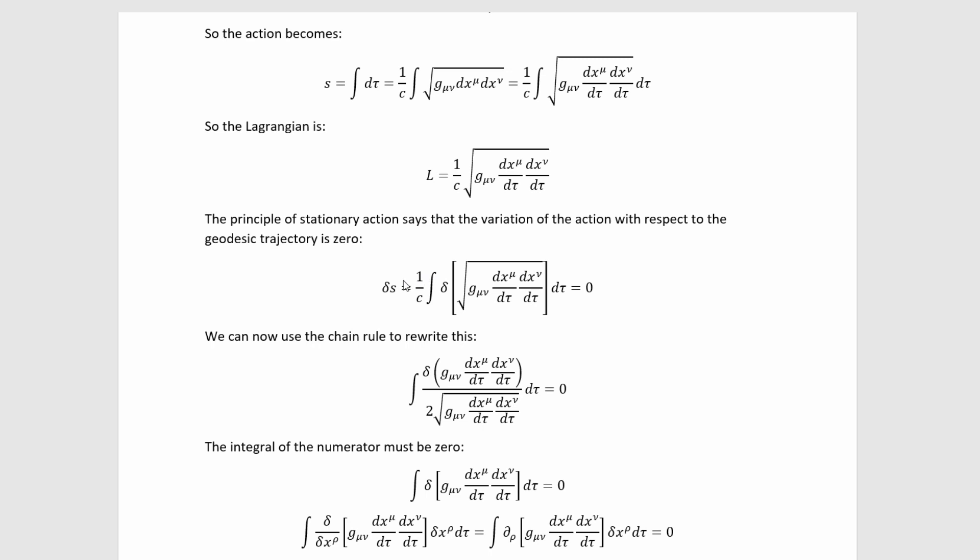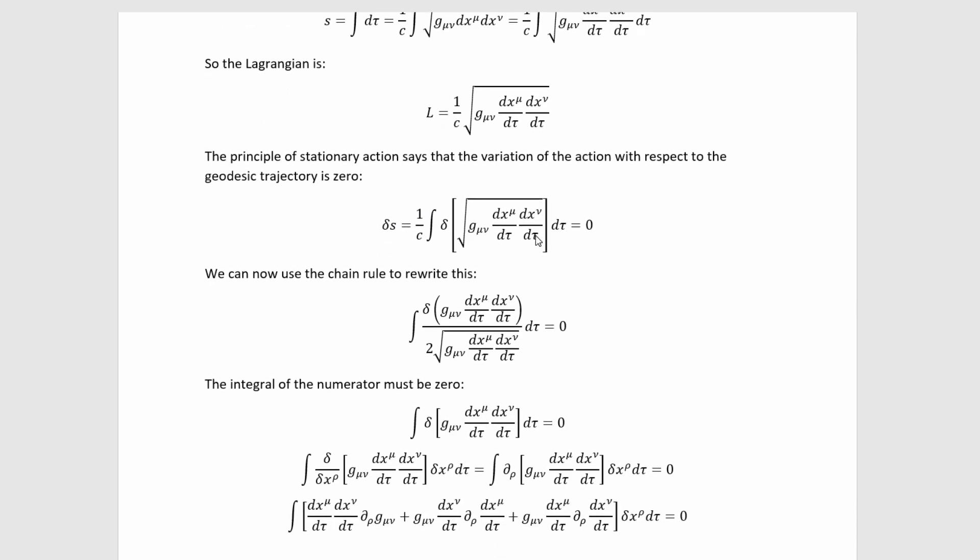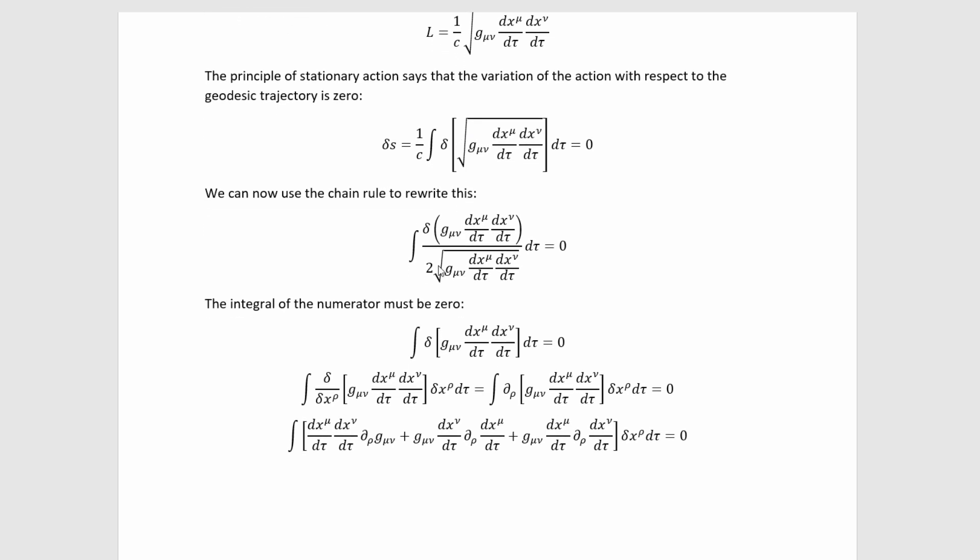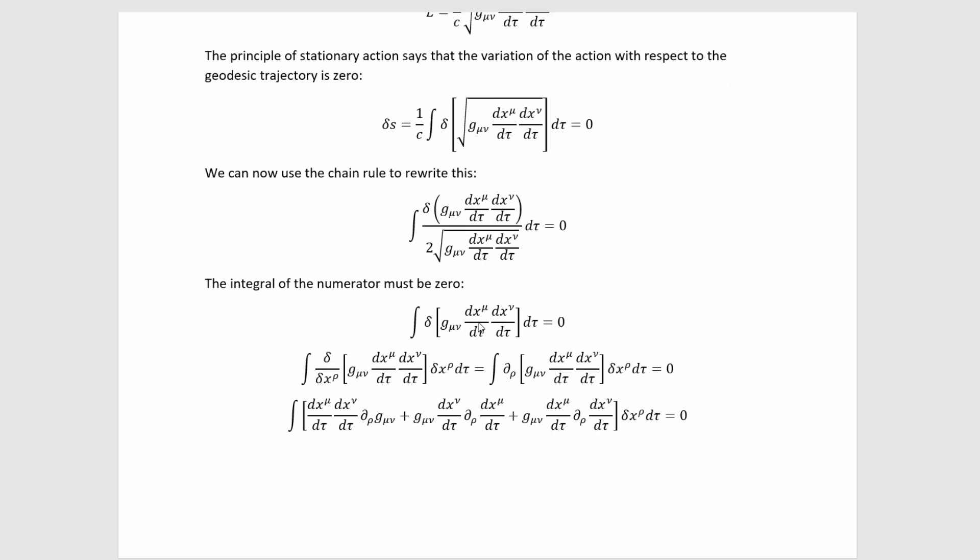We need to set the variation of the action equal to zero, which gives us this. This is a bit difficult to work with directly because of the square root. However, the chain rule helps us out here. The chain rule takes us from this down to this. This really does get us in a better position because this action should vanish for all possible integration limits. Therefore, the integrand must be zero. But that means the numerator must be zero, which allows us to write this.